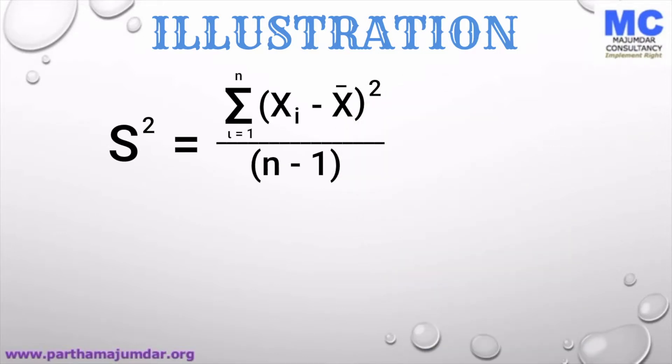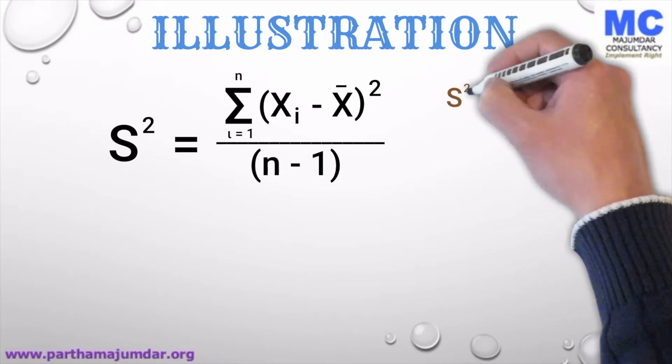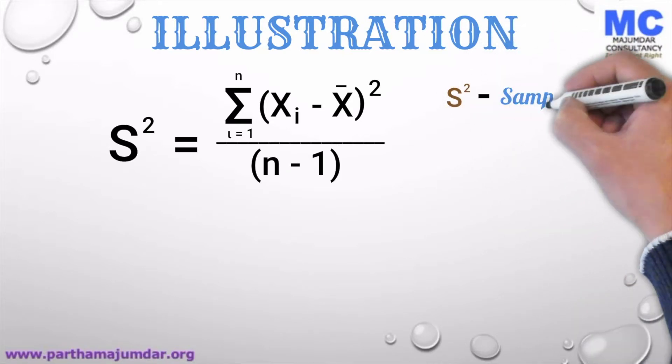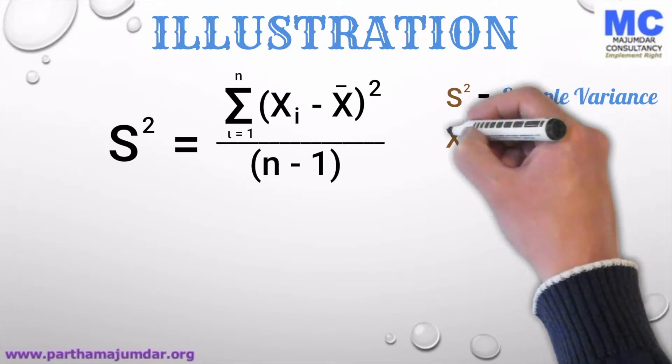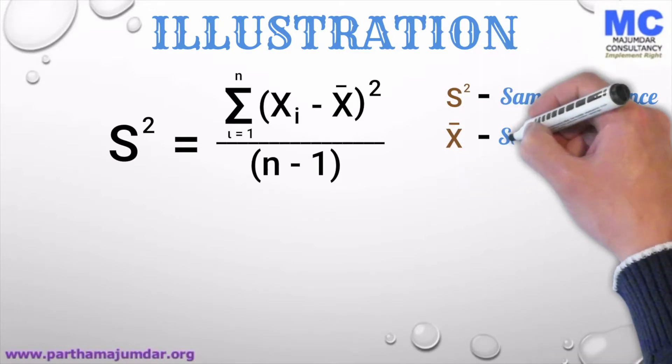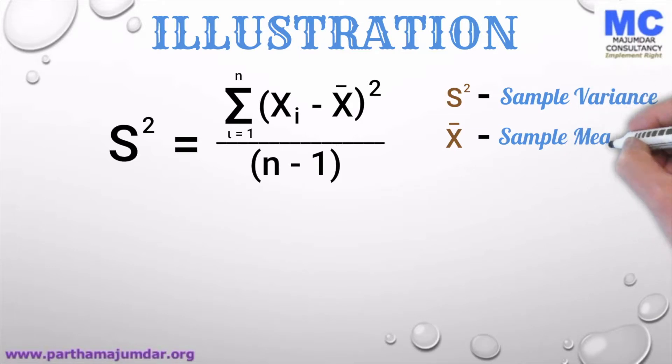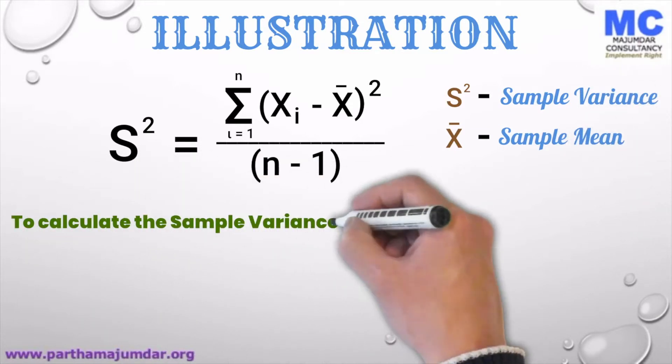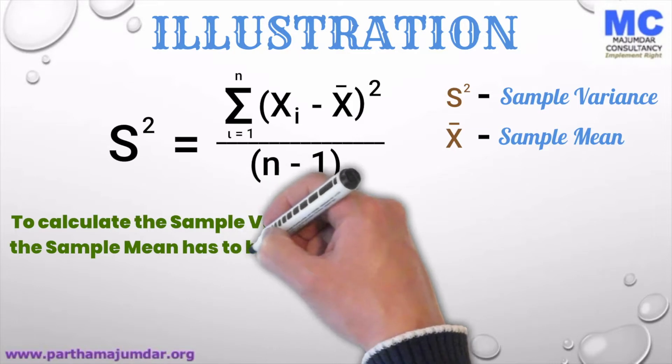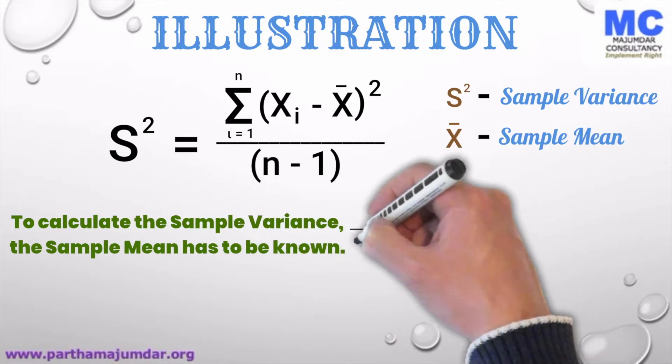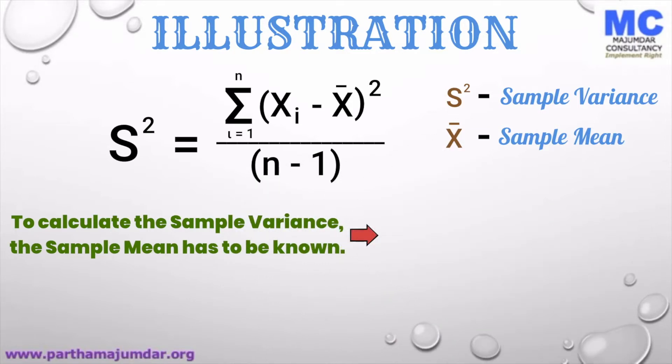So as we stated, the s squared is the sample variance and x hat is the sample mean. From this formula, it is clear that to calculate the sample variance, the sample mean has to be known.